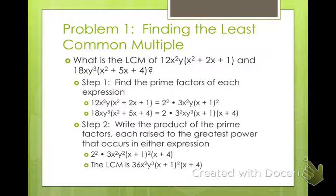And you get 2 times 2 is 4. That is also supposed to be 3². Okay, 3² is 9, and 9 times 4 is 36. That's why it's 36. x² times y³ times (x+1)² times (x+4). So that's your least common multiple.